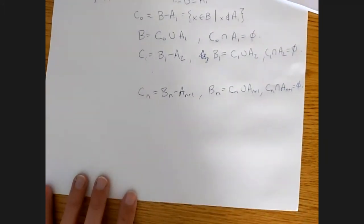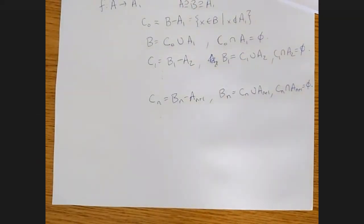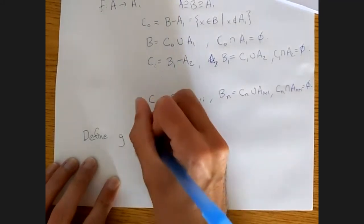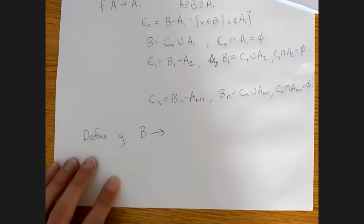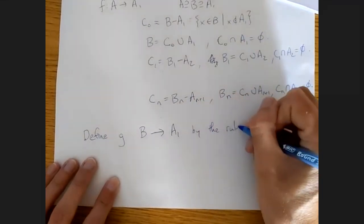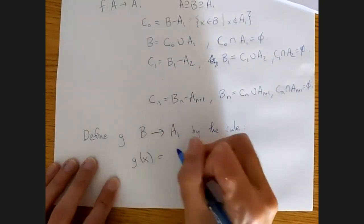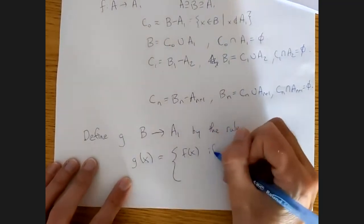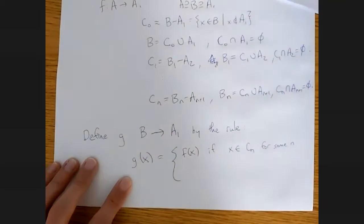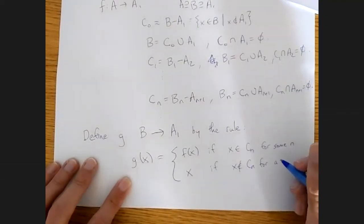And how does this help us? Well, we use this to define a function. So we define g from b to a1 by the rule: g of x equals f of x if x is in some cn for some n, and g of x equals x if x is not in cn for all n.